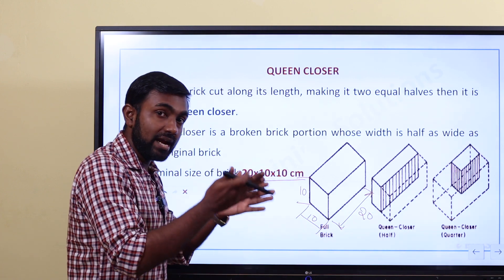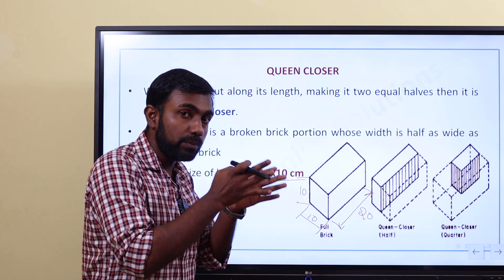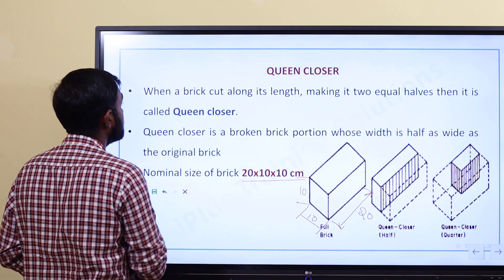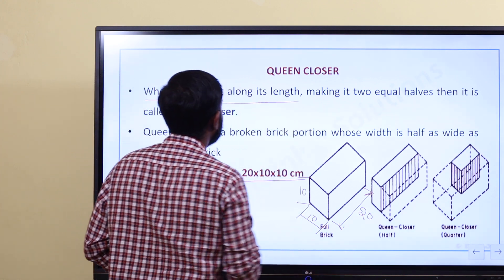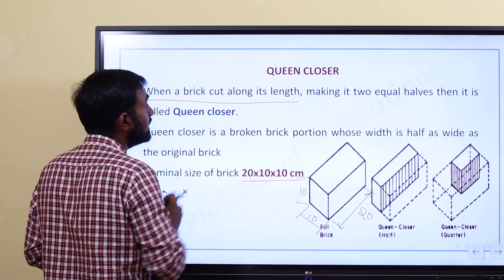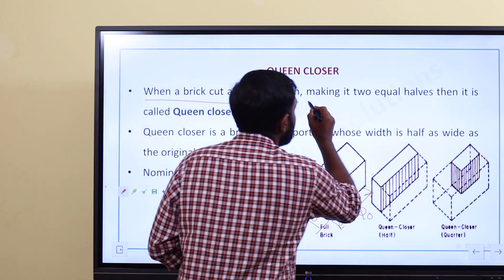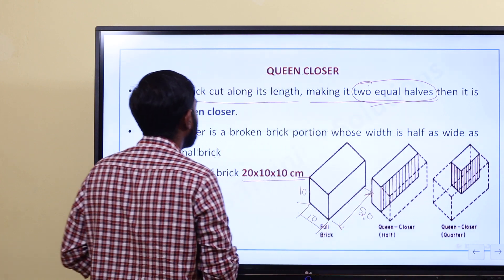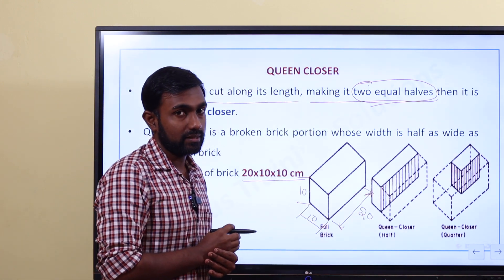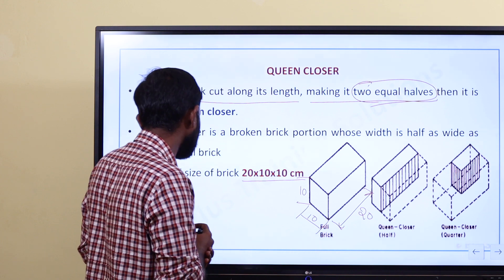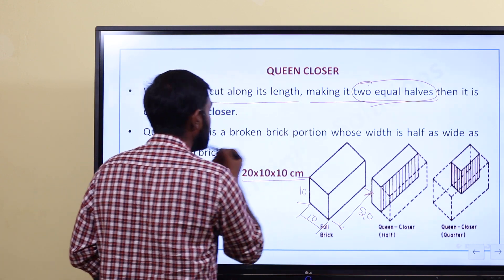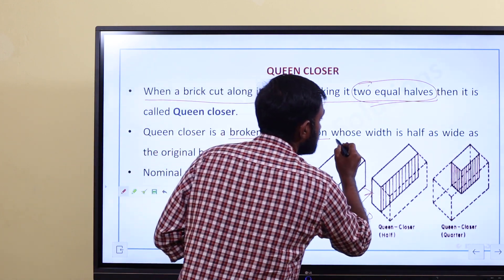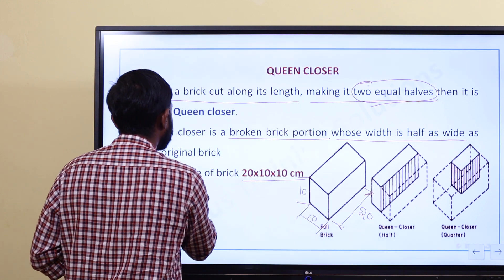That is the dimension. When the length is equal, one portion is called queen closer. What is the definition of queen closer? When a brick is cut along its length to make two equal halves, that is called queen closer. Queen closer is a broken brick portion whose width is half as wide as the original brick.